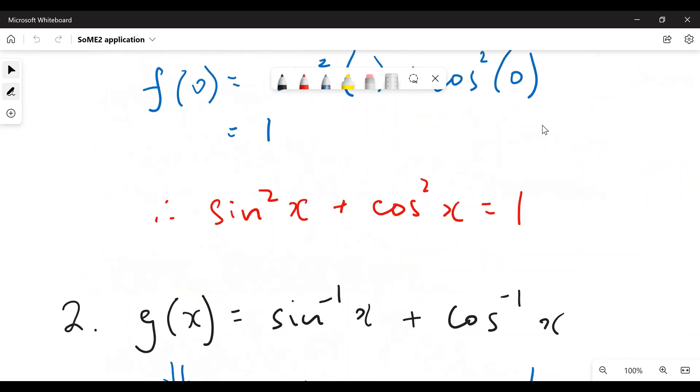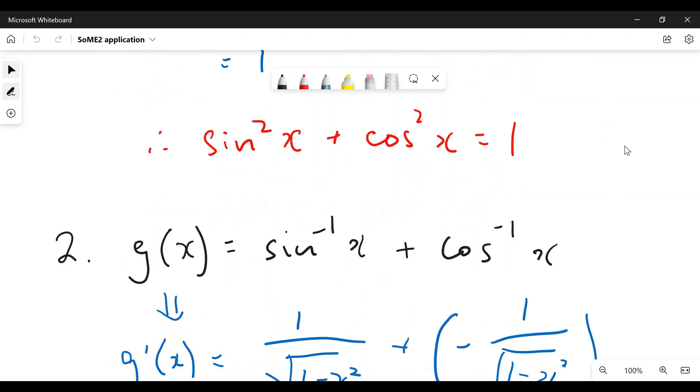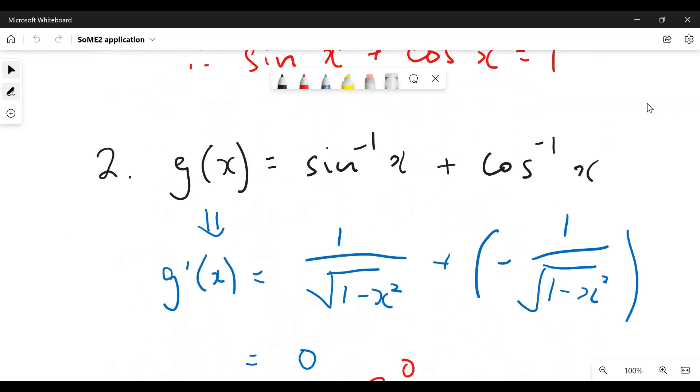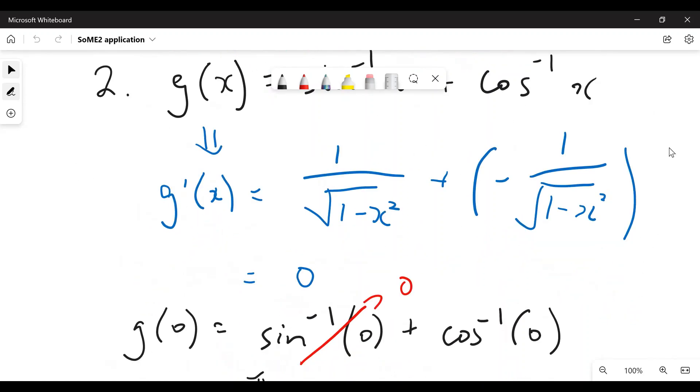Next example, inverse sine x plus inverse cosine of x. Differentiate them. Yes, they're the opposite of each other. Sum them up and it's zero.